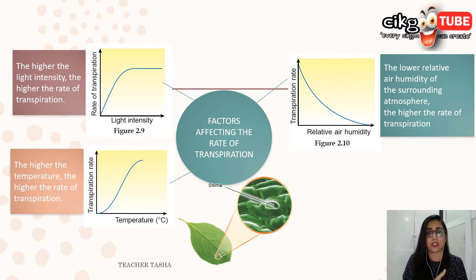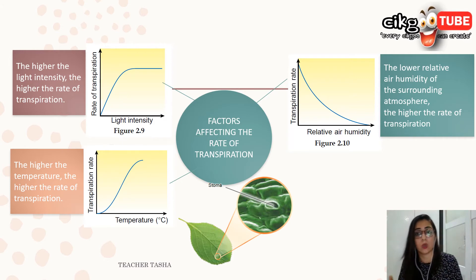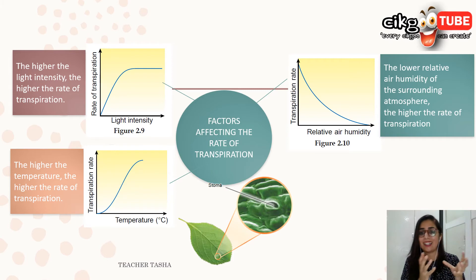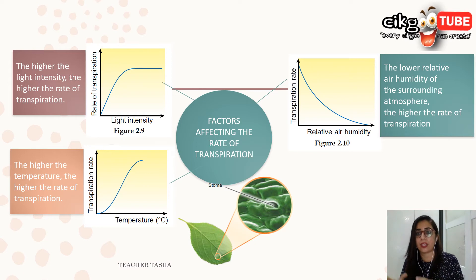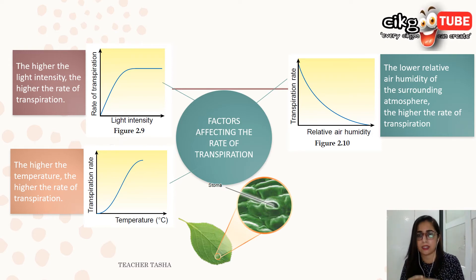Higher temperature lowers the relative humidity of the surrounding air, and vice versa. To summarize: the lower the relative air humidity of the surrounding atmosphere, the higher the rate of transpiration.